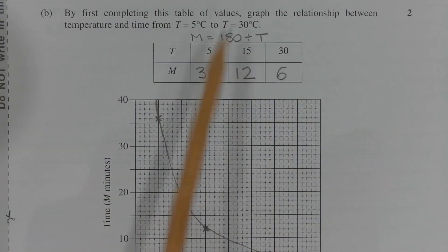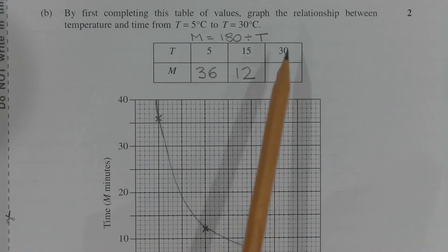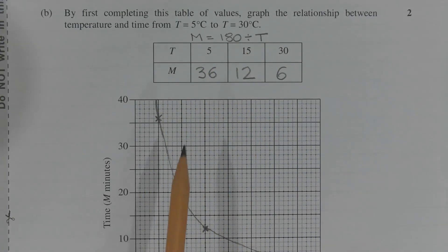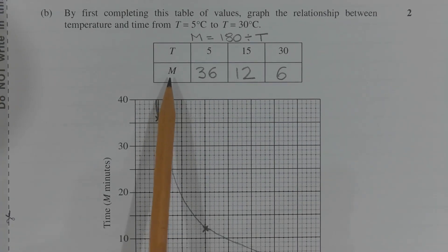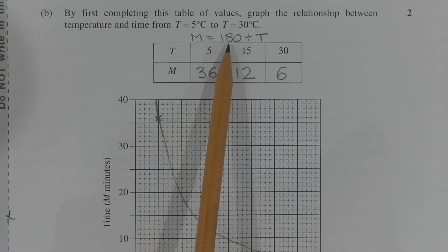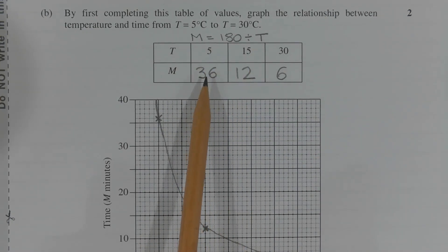Complete the table of values by substituting the values for T in the top row into the equation m equals 180 divided by T to find the corresponding values for m in the bottom row. When T is equal to 5, m is equal to 180 divided by 5, which equals 36.